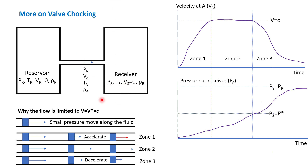So when you have this kind of phenomena, if you want to know the maximum velocity here, it will be the sonic velocity. And the maximum pressure of the receiver to reach this sonic velocity is P-star — the critical pressure. When the pressure at the receiver is above the critical pressure, the velocity here will be less than the sonic velocity, as we can see in zone 3 in this illustration.